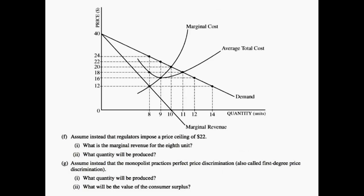Now let's move on to part F. We are asked to look at the implications of a price ceiling. We want to know what will happen if a regulator were to impose a price ceiling of $22 in terms of the marginal revenue of the eighth unit, as well as the quantity that will be produced. This price ceiling means the monopolist can no longer charge a price above $22. The seventh unit is going to bring additional revenue of $22, and the eighth unit will also bring in revenue of $22. Because of the price ceiling, the marginal revenue of the eighth unit will be $22.